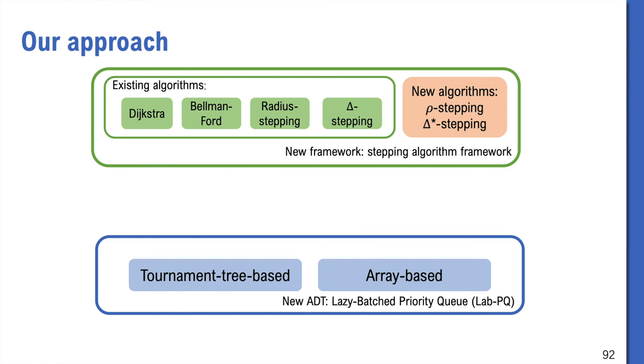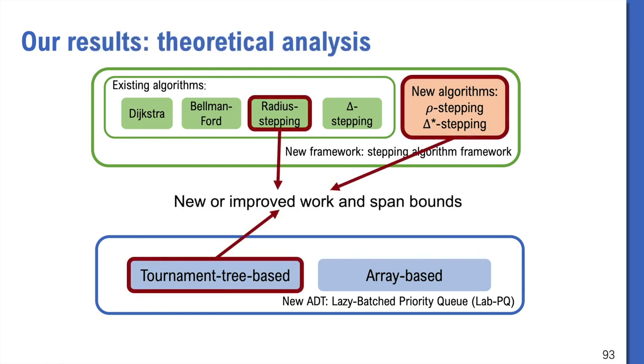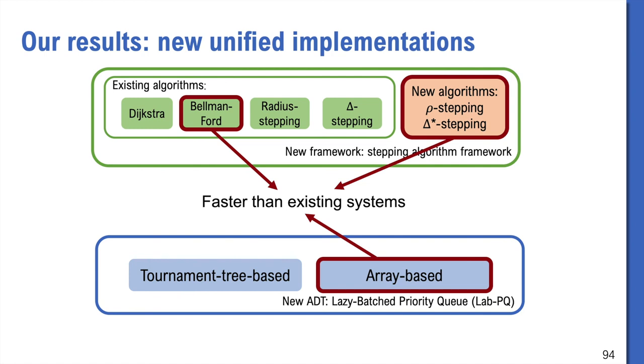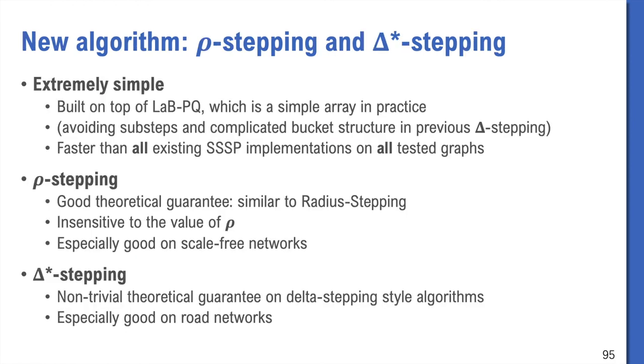Let me summarize our work. This work uses a stepping-algorithm framework and an ADT lazy-batch priority queue, and proposed two new algorithms, Rho-stepping and Delta*-stepping. By using tournament tree-based LabPQ, we achieve new or improved bounds. And by using array-based LabPQ, we have efficient implementations that are faster than the state-of-the-art systems. Our two algorithms, Rho-stepping and Delta*-stepping, are very simple on top of our LabPQ interface. They are also fast in practice. Rho-stepping achieves good theoretical guarantee that is similar to Radius-stepping. It's insensitive to the value of rho and especially good on scale-free networks.